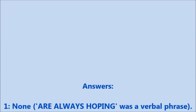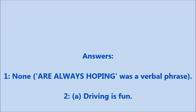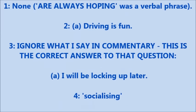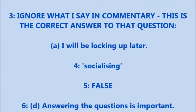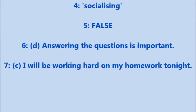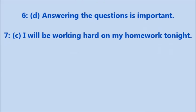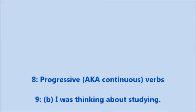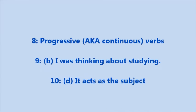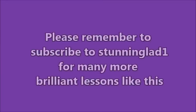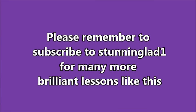The answers: number one — none. 'Always hoping' was a verbal phrase. Two — A: 'Driving is fun.' Three — B: 'Tim remembers visiting that street.' Four — socialising. Five — false. Six — D: 'Answering the questions is important.' Seven — C: 'I will be working hard on my homework tonight.' Eight — progressive, also known as continuous verbs. Nine — B: 'I was thinking about studying.' Ten — D: it acts as the subject. And that's all we have time for — I'll see you all in the next show. I hope you did well in the quiz!